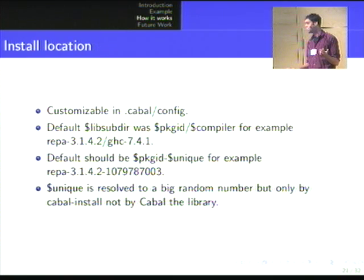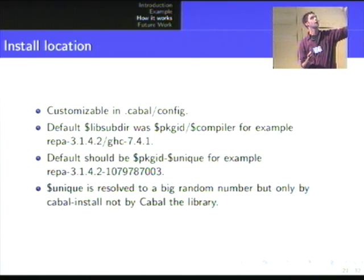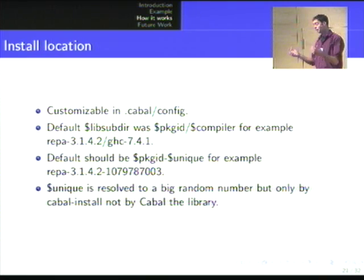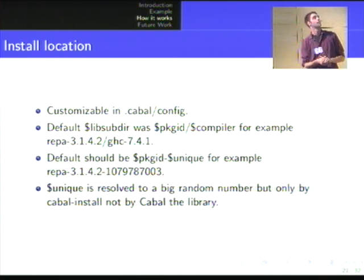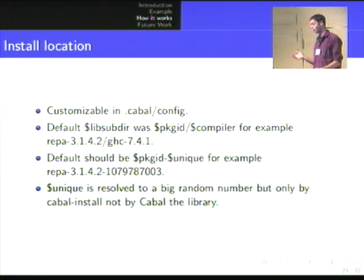You also got rid of the GHC version subdirectory? Yes — because multiple instances compiled with different versions of the compiler get installed to unique locations anyway, and I don't find that information that important. But it's debatable what to insert into the path.